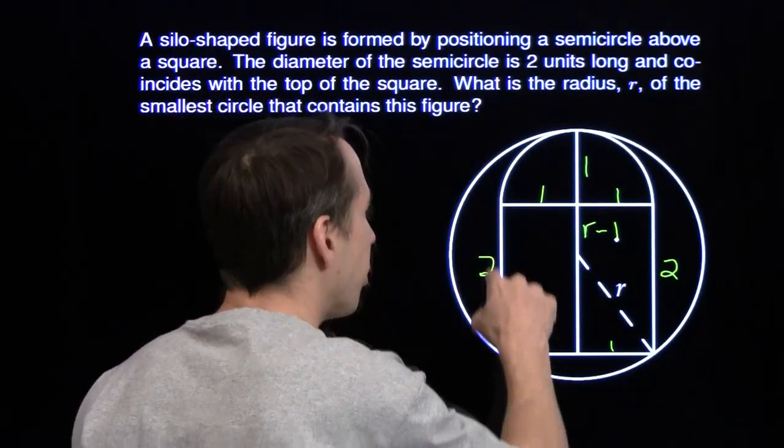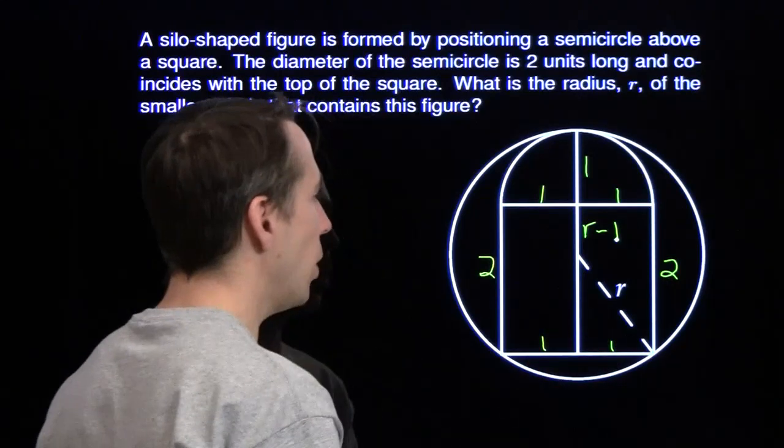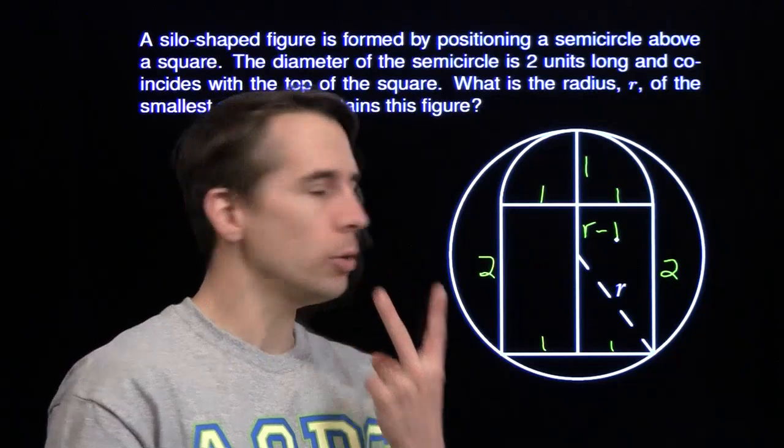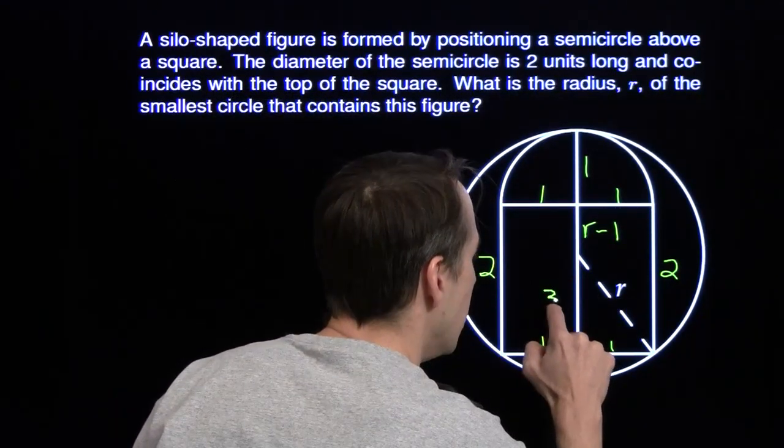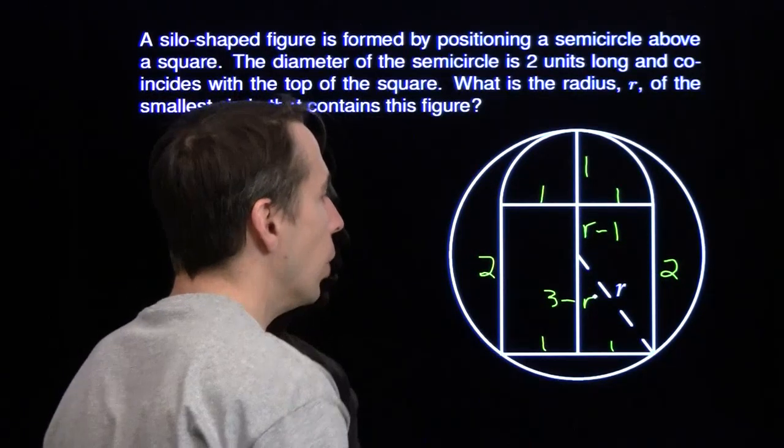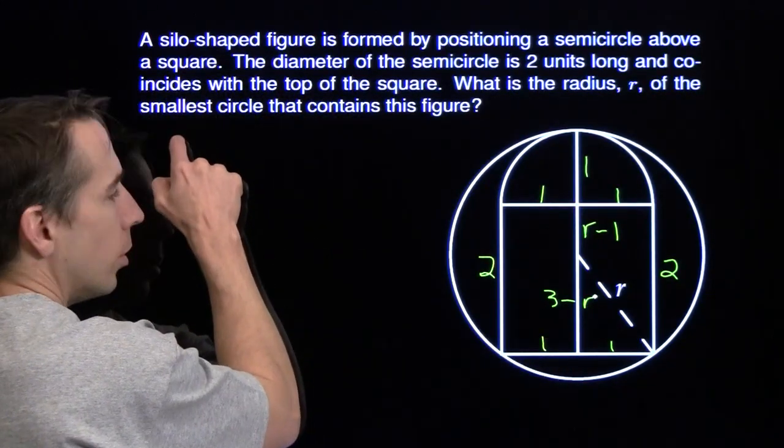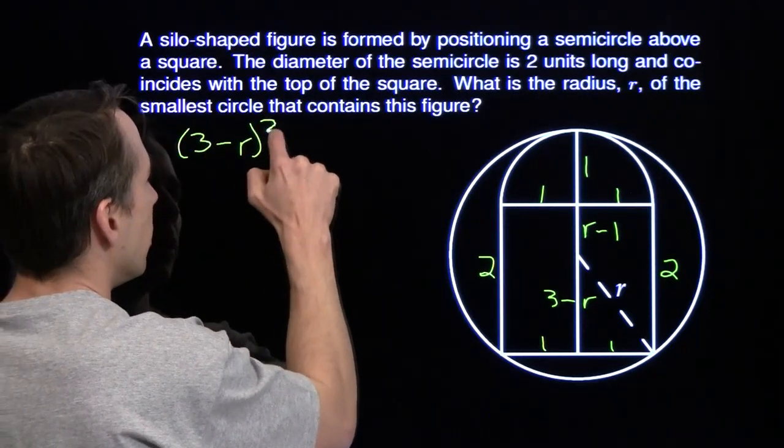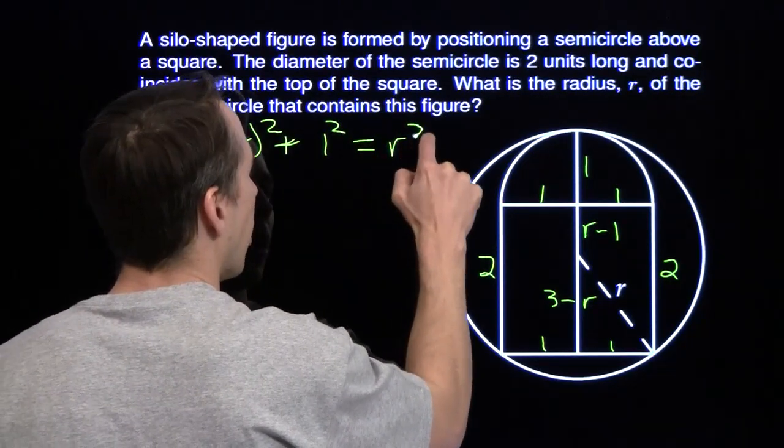Wait a second. This whole thing, this whole thing is 2. This is r minus 1. So this piece right here plus this has to be 2. That means that this piece right here is 3 minus r, because this plus this adds up to be 2. And now I can use the Pythagorean theorem right there.